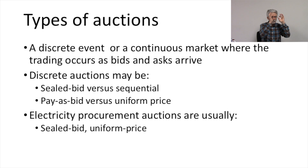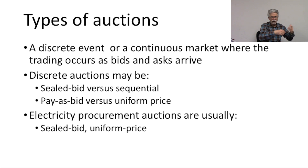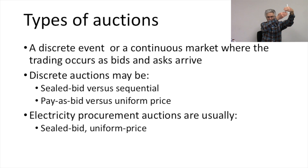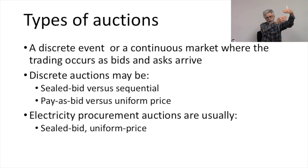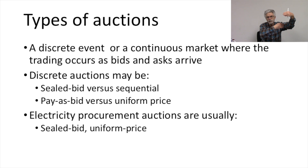Or you could have a sequence of one-time auctions where buyers and sellers submit their bids. In the case of an electricity procurement auction, the buyers — the DISCOM — are just saying how many units they want to buy. The sellers are GENCOs who are making their price and quantity bids into this auction, saying how much they are willing to supply for at least a certain price. For example: I am willing to supply 100 megawatts as long as I can get at least 60 dollars.